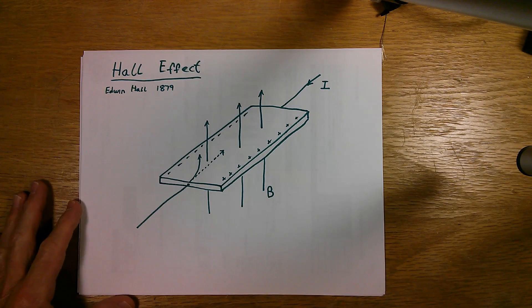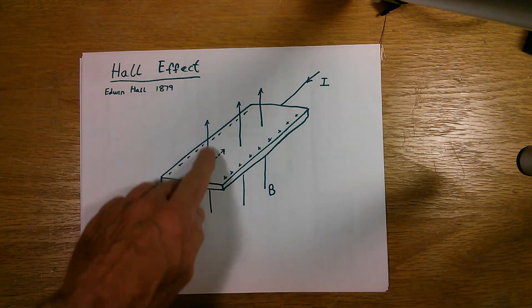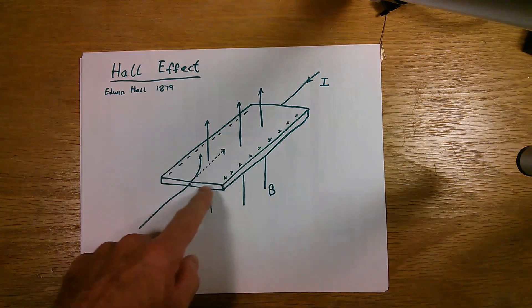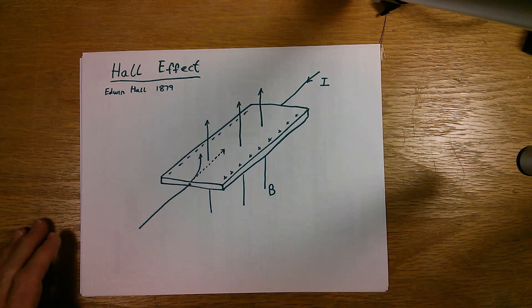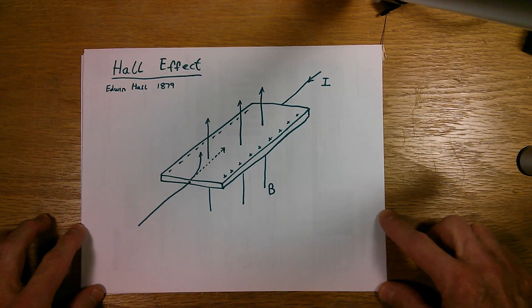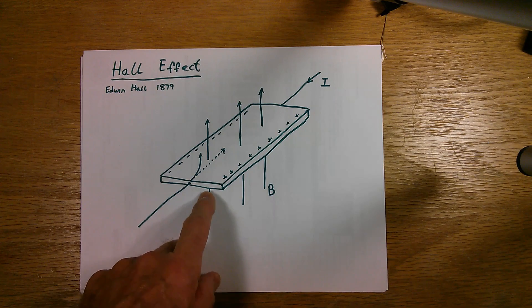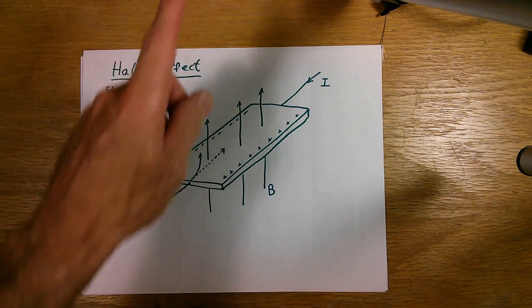So what happens in the presence of a magnetic field, which I've shown here going through this slab of, this is a slab of conductor. It could be anything that conducts electricity: silicon, copper, whatever. We have a magnetic field that's going from underneath the slab out through it to the top, and it's perpendicular in this case to the slab.